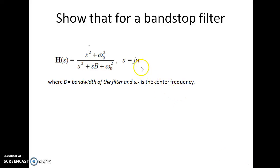Hello friends, let us discuss another numerical on filter module based on the theories we have discussed. The question is, show that for a bandstop filter H of S equals S squared plus omega naught squared by S squared plus S B plus omega naught squared, where S equals j omega, B equals bandwidth of the filter, and omega naught is the center frequency.